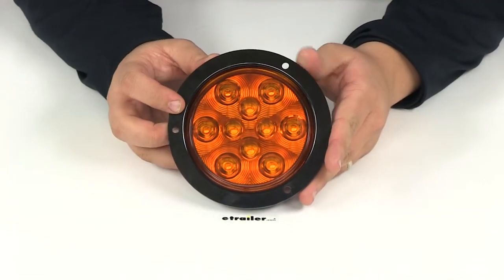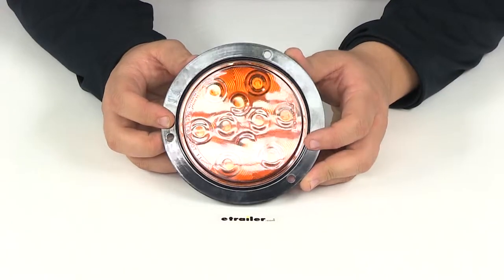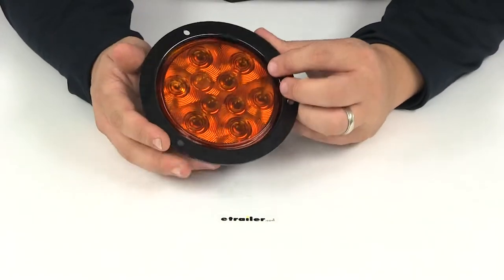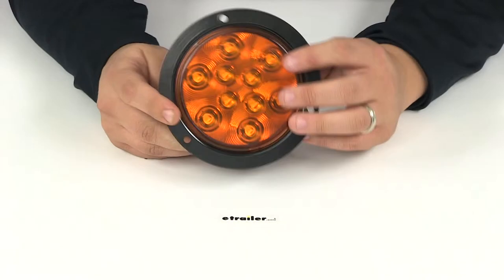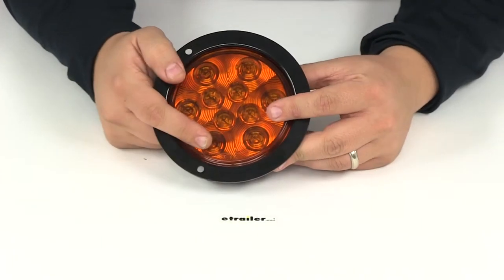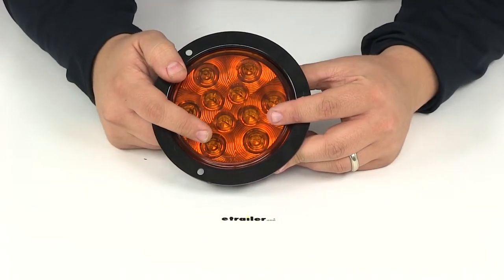This light draws 0.310 and 0.046 amps at 12.8 volts. You can see here that it features amber LEDs as well as an amber colored lens.